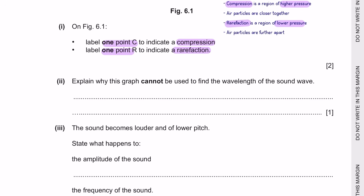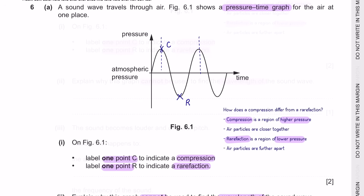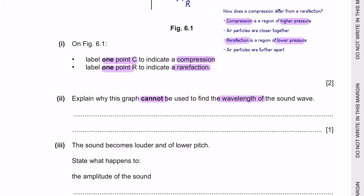Part 2: Explain why this graph cannot be used to find the wavelength of the sound wave. To find wavelength, we need displacement versus position data. This graph shows pressure versus time, so it does not provide the displacement information needed to determine wavelength.